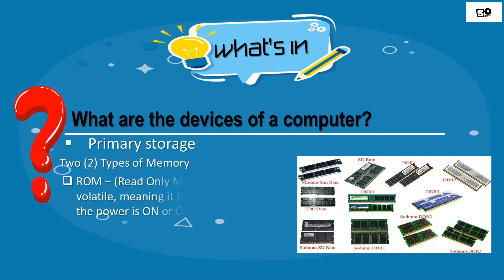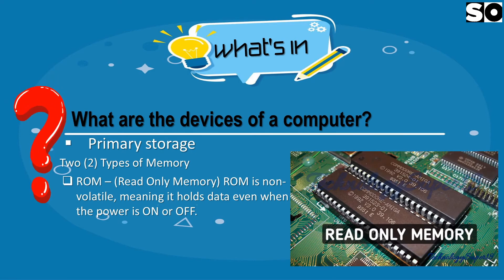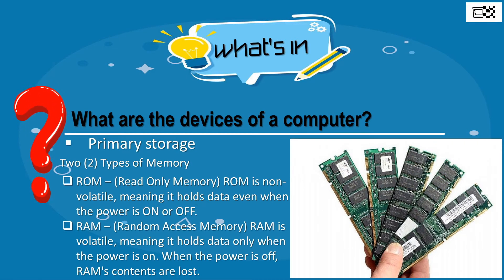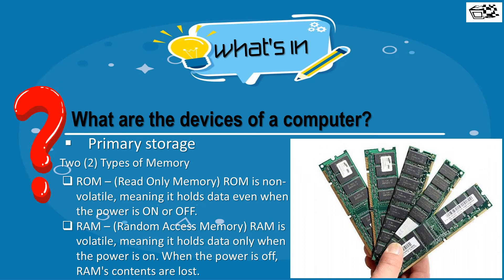Two types of memory. ROM, or read-only memory — ROM is non-volatile, meaning it holds data even when the power is on or off. RAM, or random access memory — RAM is volatile, meaning it holds data only when the power is on. When the power is off, RAM's contents are lost.